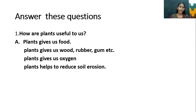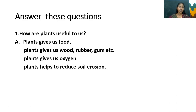Plants also give us oxygen. Plants help to reduce soil erosion. So plants give us food, rubber, gum, etc., oxygen, and they help reduce soil erosion.